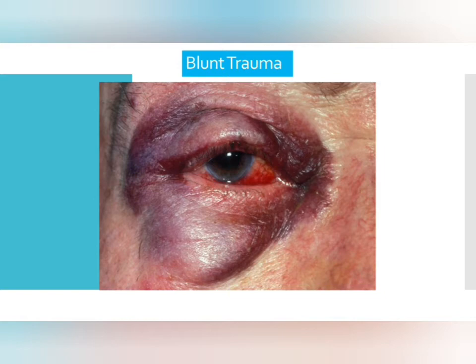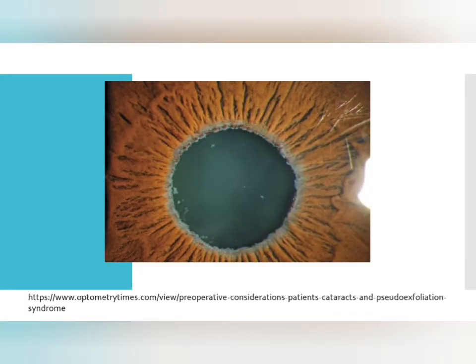In blunt trauma, if hyphema is present, avoid gonioscopy. If there is no hyphema and the patient is not symptomatic, perform gonioscopy. If the patient is symptomatic, avoid gonioscopy and wait for a follow-up visit until the patient has recovered. Blunt trauma is an indication because of the risk of angle recession, which can lead to angle recession glaucoma. Note that pigment dispersion syndrome and angle recession lead to secondary glaucoma, not primary glaucoma.